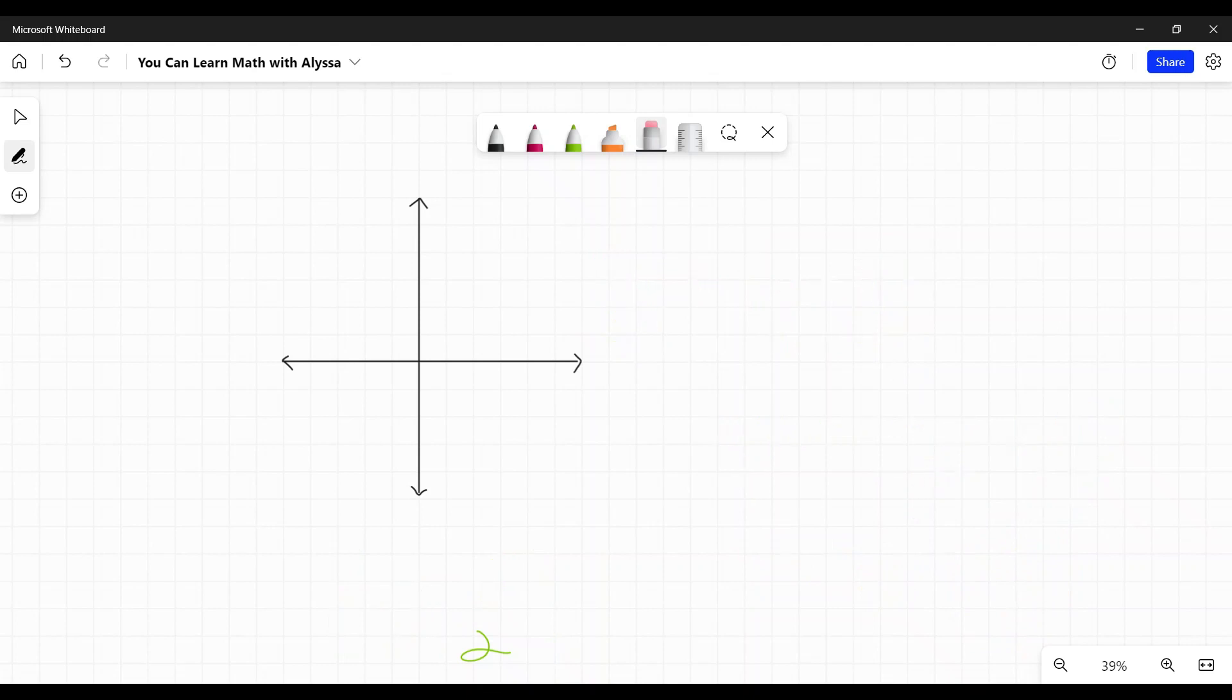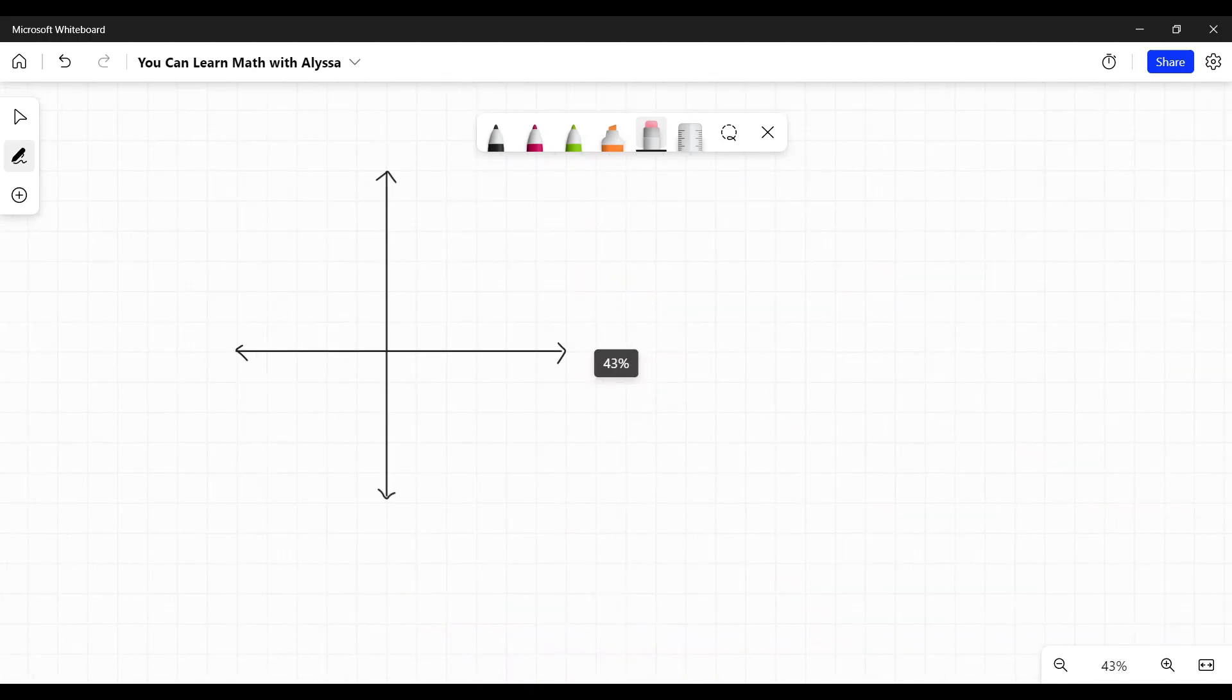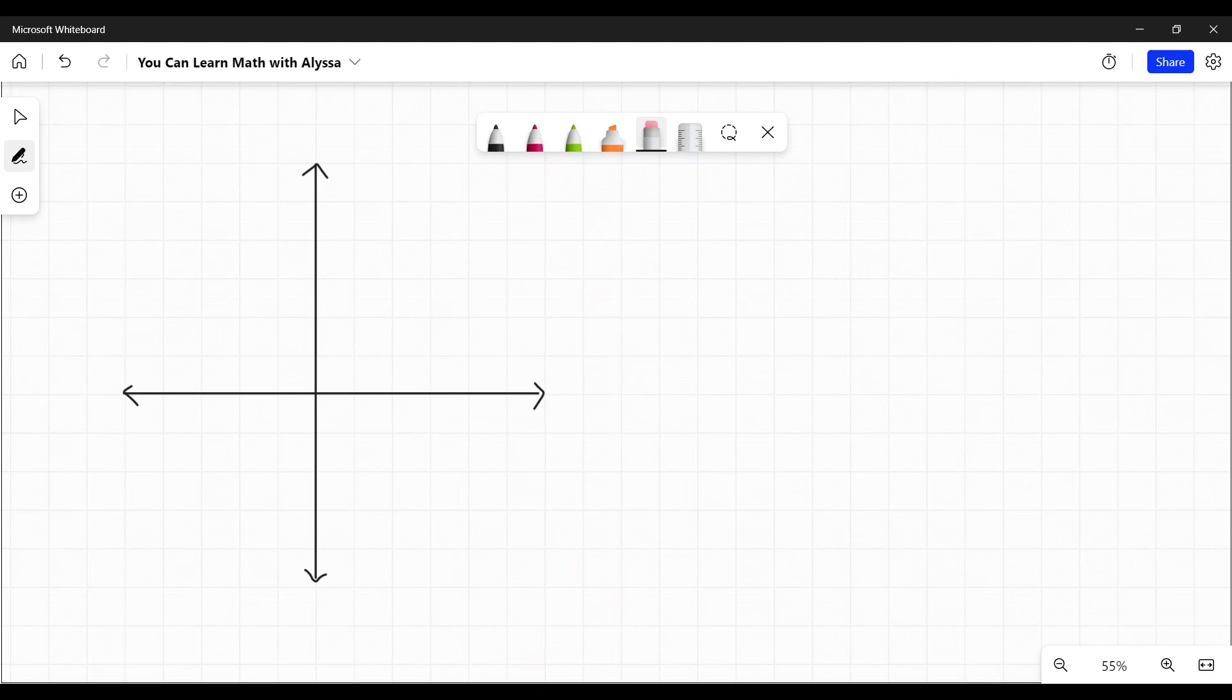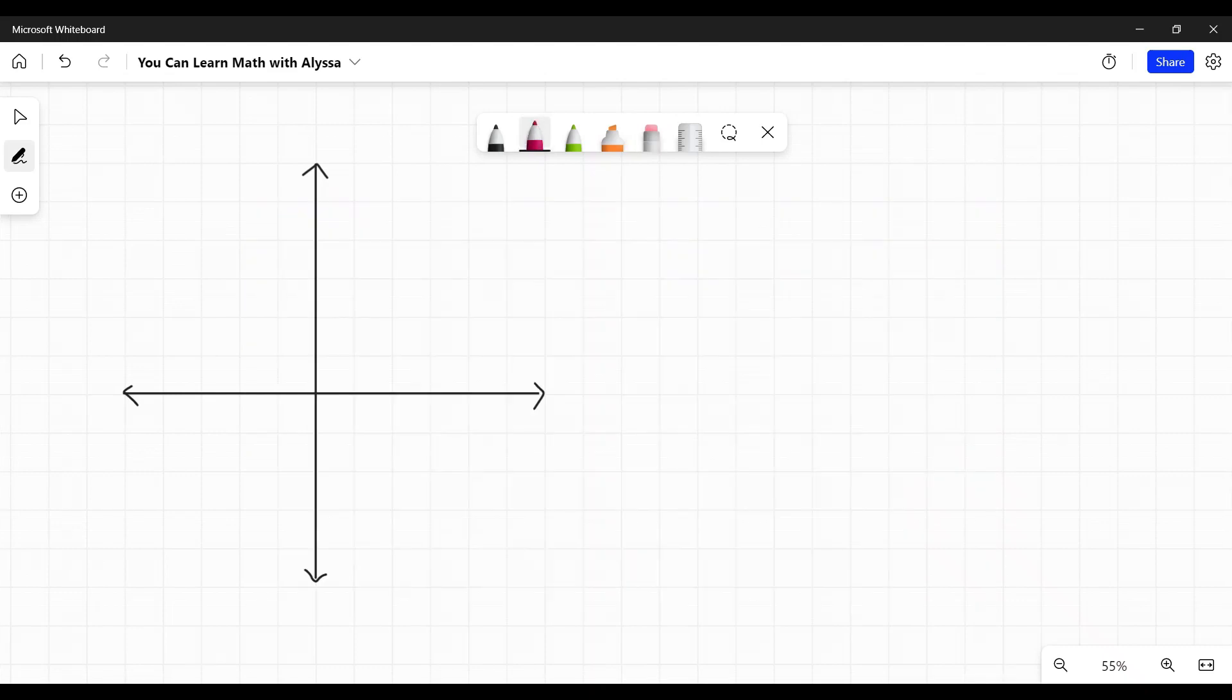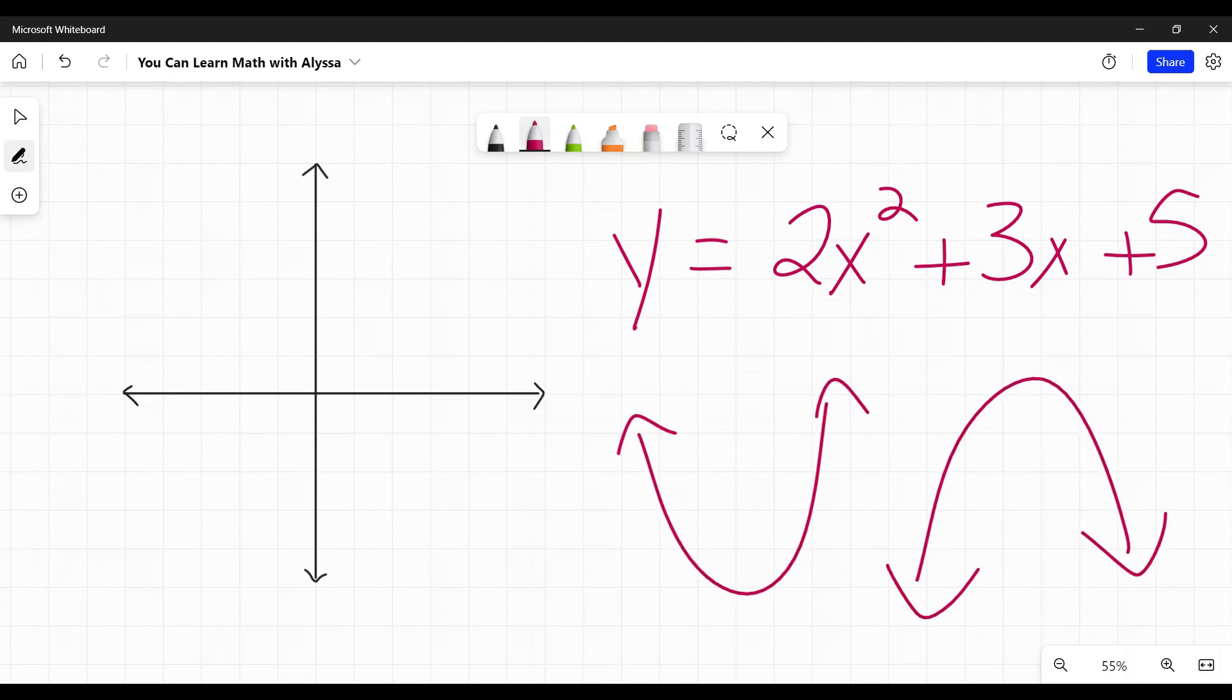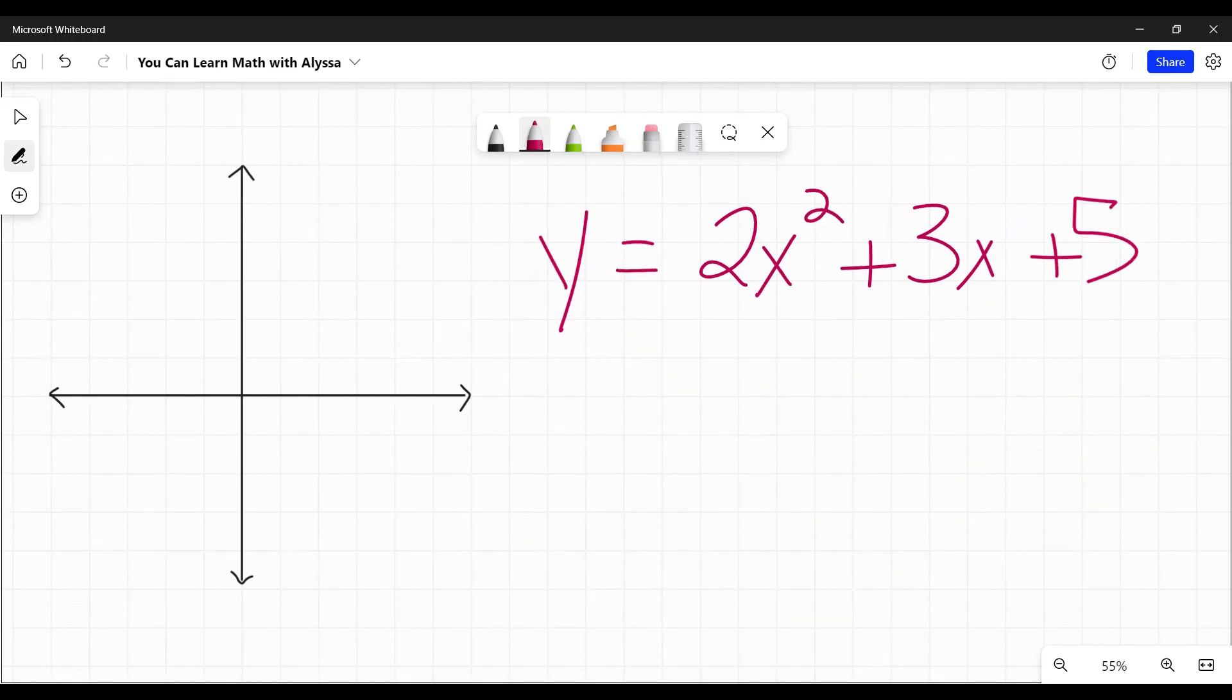So what about other functions? Other functions don't go into that nice y equals mx plus b kind of format. They don't have that little standard where they're telling us this is the y-intercept. Or do they? Let's look at one. So I have y equals, let's say, 2x squared plus 3x plus 5. That is a parabola. It's a quadratic parabola. Usually they look something like this, either up or down. They can be narrow, they can be wide, but that's our basic shape.